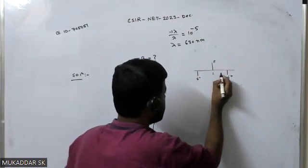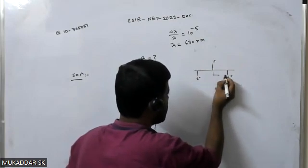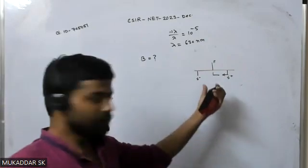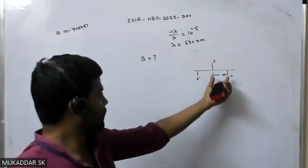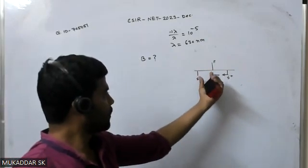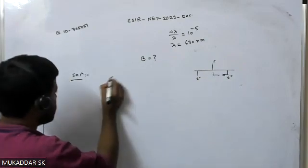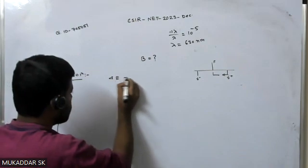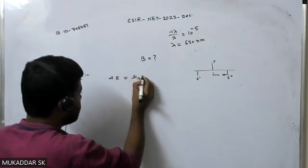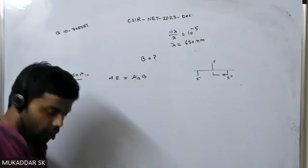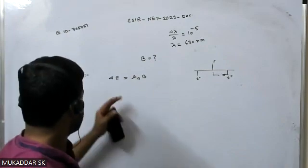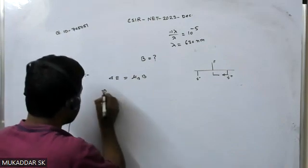So this shift is known as Zeeman shift. This shift in the energy, that is E sigma plus minus E pi, or E pi minus E sigma minus, this shift is always mu_B times B. This is true for Normal Zeeman effect.